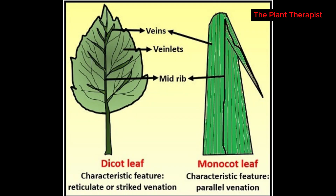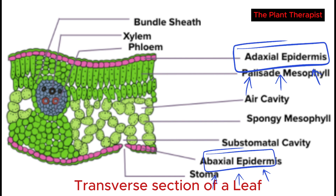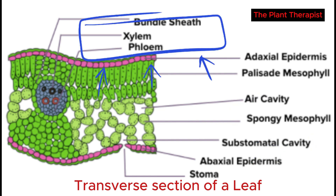Internal structure of leaves. If a typical leaf is cut transversely and examined under a microscope, three regions will be observed: the epidermis, the mesophyll, and veins, referred to as the vascular bundle.